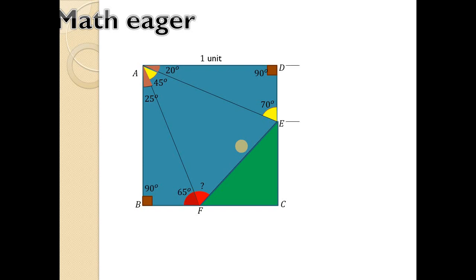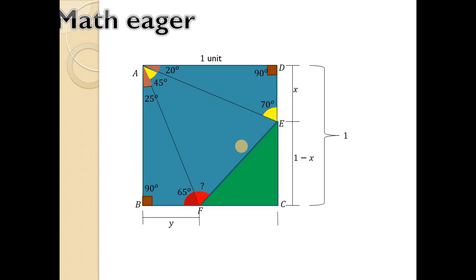Let the magnitude of DE be X. Then the magnitude of EC will be 1 minus X, because the whole magnitude of DC is 1, which is given. Similarly, if we assume the magnitude of BF is Y, then the magnitude of FC will be 1 minus Y.